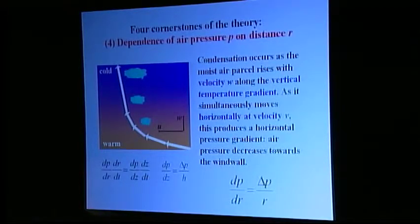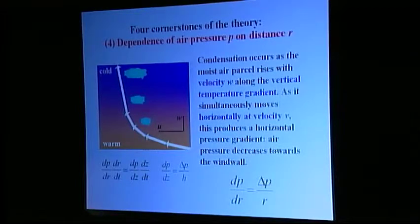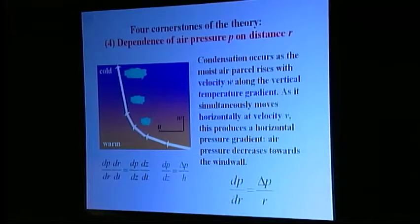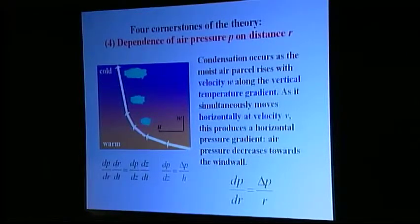As soon as a moist air parcel rises at vertical velocity W, some part of its water vapor condenses. Weight of the air column diminishes, and the air pressure at the surface drops. The closer to the center, the higher the pressure drop, as the resulting equation at the bottom prescribes. Note that this equation is valid for the area outside the eye only. In other words, pressure gradient is sustained by condensation of water vapor, which in its turn is made possible due to the air flow sustained by the pressure gradient. Thus, the condensation-induced circulation operates on the basis of a positive feedback.